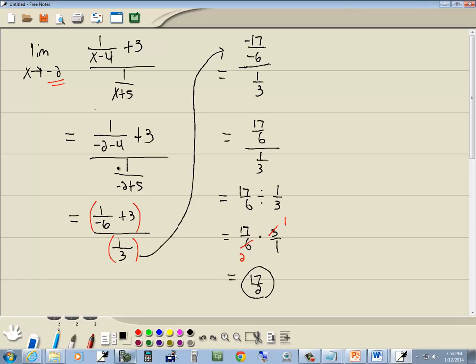Why did I put parentheses around the top, parentheses around the bottom? If you have more than a single number or a single variable on top or bottom of your fraction, you have to put parentheses around it. That's why I did those red parentheses you see there. So, two different ways you could have simplified that to get to the 17 halves.